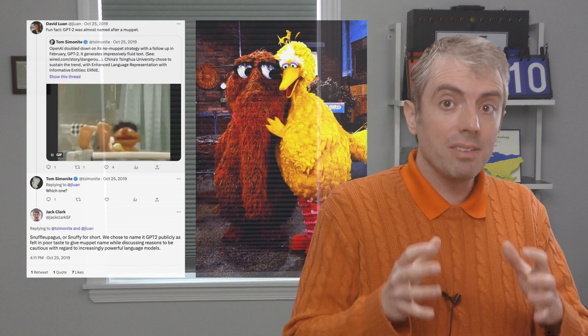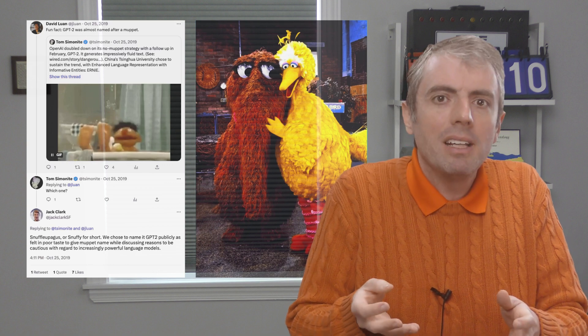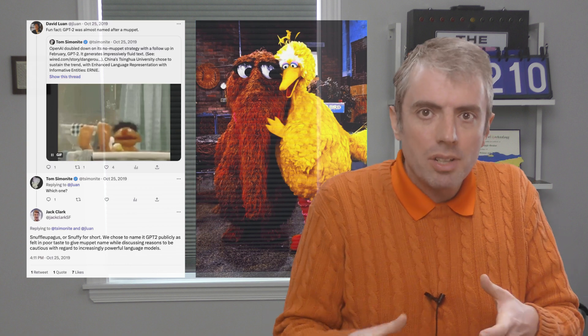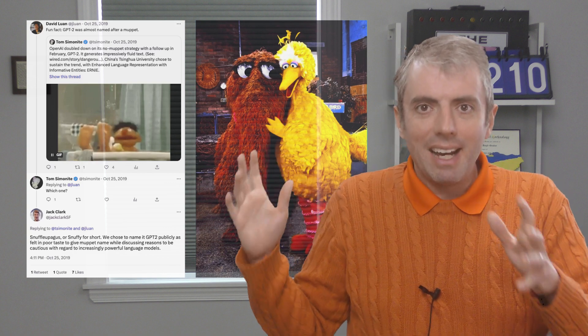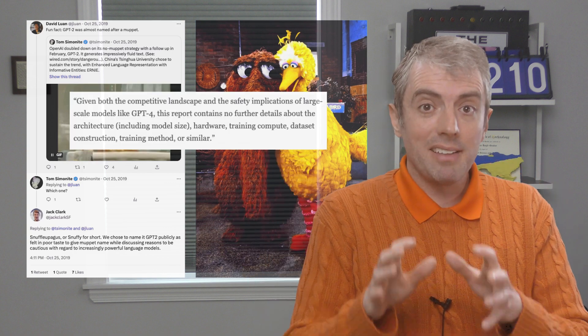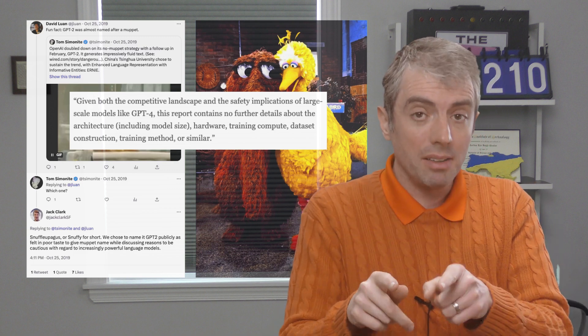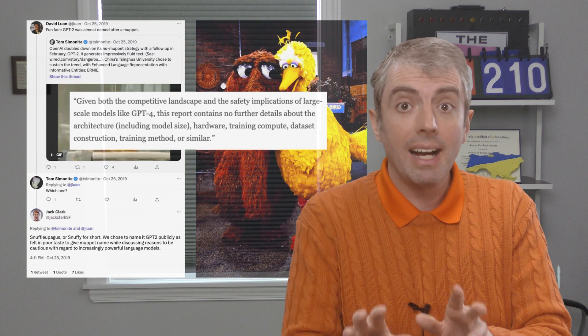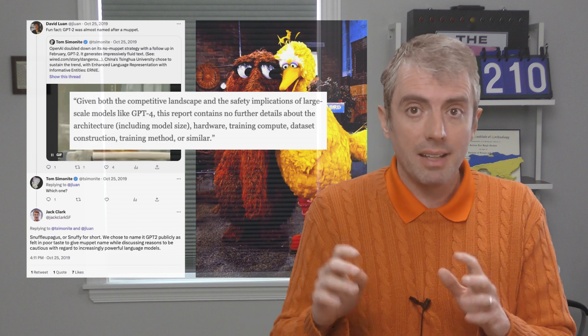And the model all in the news today, GPT, was supposed to be called Snuffleupagus, Big Bird's possibly imaginary friend who is an elephant-like creature, until OpenAI chickened out. As an aside, a Muppet that is gigantic and that only a select few can see is a perfect name for a model about whom OpenAI isn't sharing anything about the architecture, hardware, compute, dataset, or training.